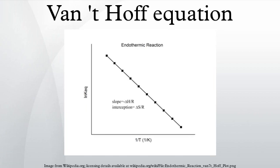Assume, for example, that the error on each log K is about 0.02 — a small but reasonable value. The error on (log K1 minus log K2) will be of the order of √2 times 0.02, approximately 0.03, and the error on ΔH° will be about 5 kJ mol⁻¹. So, even though the individual stability constants were determined with good precision, the enthalpy calculated in this way is subject to a significant error.